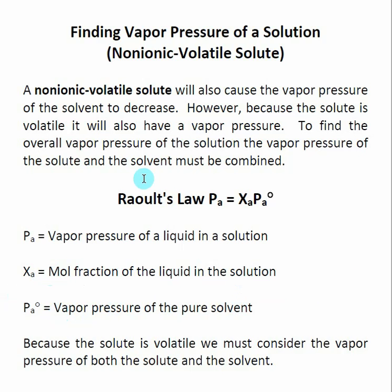An example of a non-ionic volatile solute would be ethanol or ethylene glycol dissolving in water. The solute completely mixes with the solvent to create a solution, but the solute itself does have a vapor pressure — ethanol is volatile and will evaporate. In both cases, like ethanol or ethylene glycol, which is antifreeze, the solute is non-ionic, so it does not dissociate into multiple species.